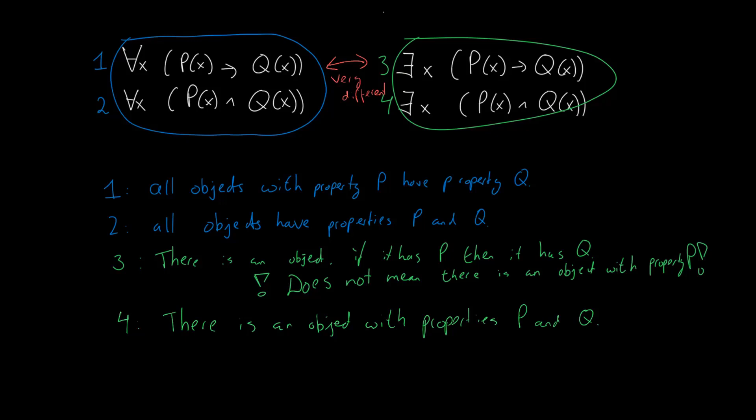And statement 4 is one you use when you're describing a single thing. For instance, there is a mortal human you could describe using statement 4. There is an x that has the property of being human and it has the property of being mortal.